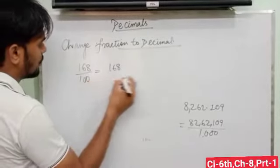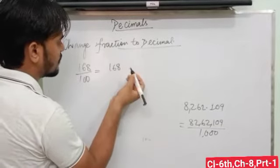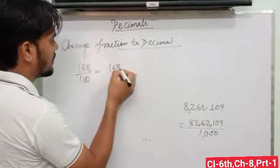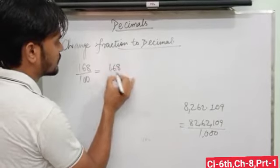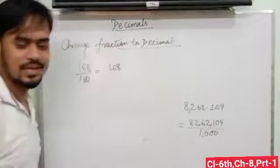Suppose here is an example: 168 upon 100. There are two zeros here, so we have to put the decimal after two digits from the left side. One, two. The answer is 1.68.